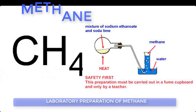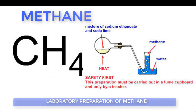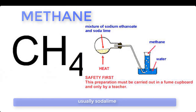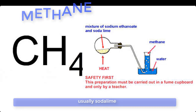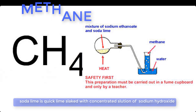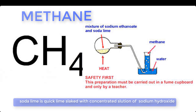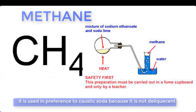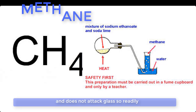Laboratory preparation. Methane is usually prepared by heating anhydrous sodium ethanoate with an alkali, usually soda lime. Soda lime is quicklime slaked with concentrated solution of sodium hydroxide. It is used in preference to caustic soda because it is not deliquescent and does not attack glass so readily.